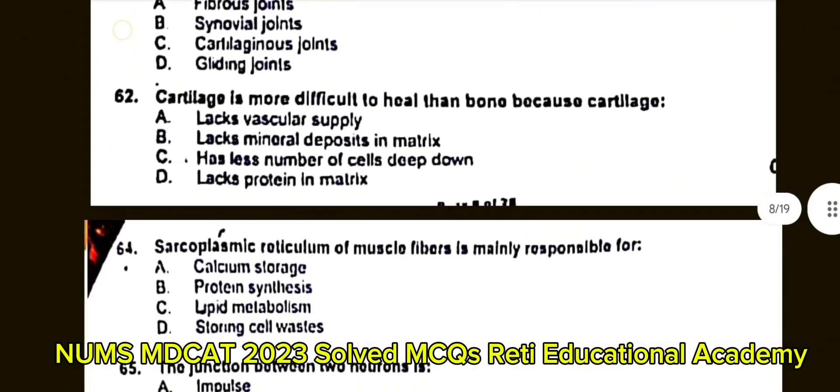Question number 63: Which feature is absent from cardiac muscle? A. Intercalated discs. B. Multinucleated cells. C. Light and dark bands. D. Contractile sarcomere. The correct answer is B: Multinucleated cells is absent from cardiac muscles.